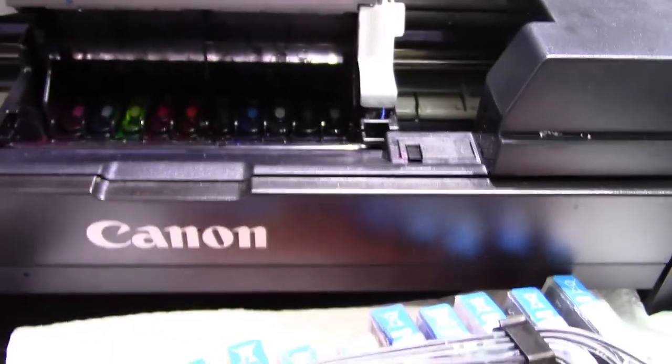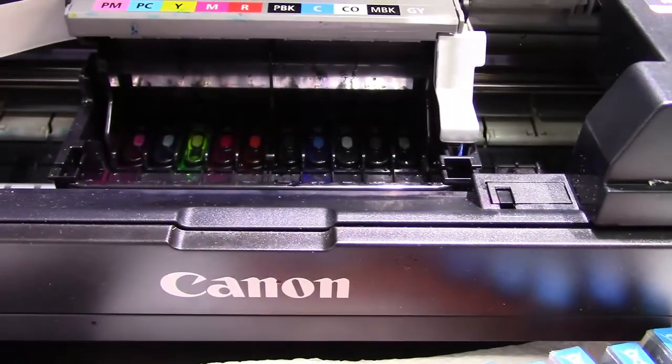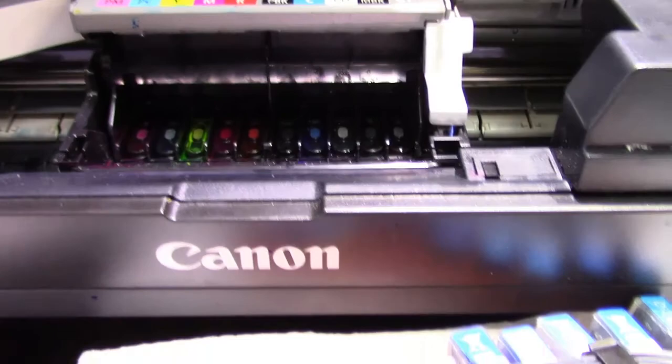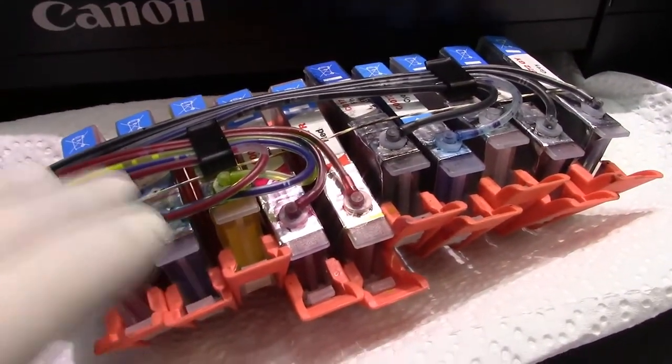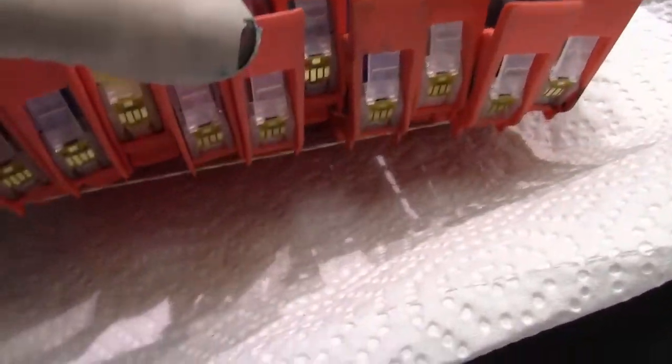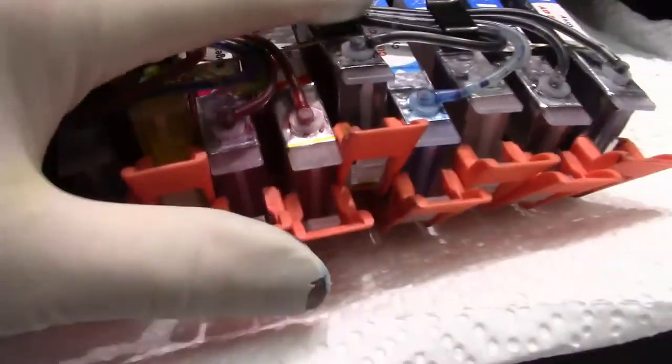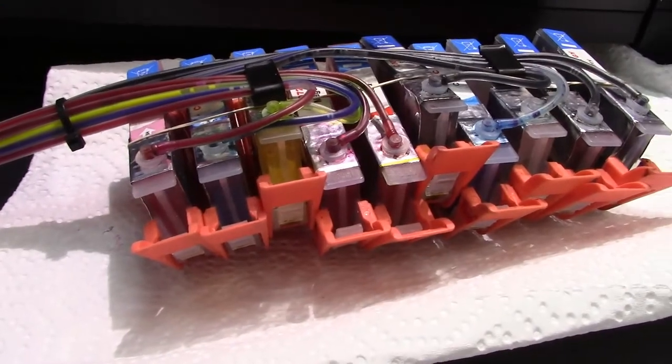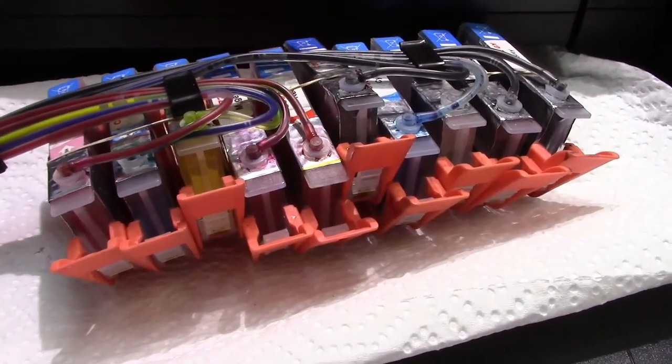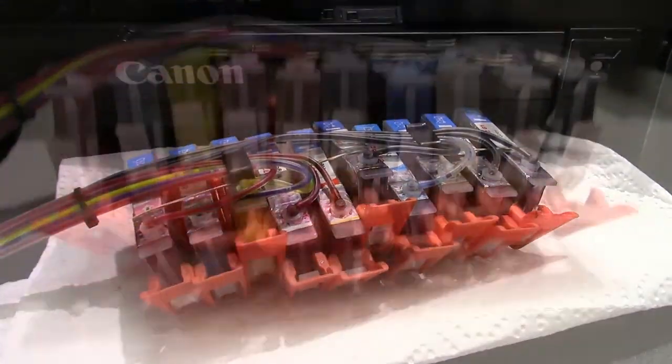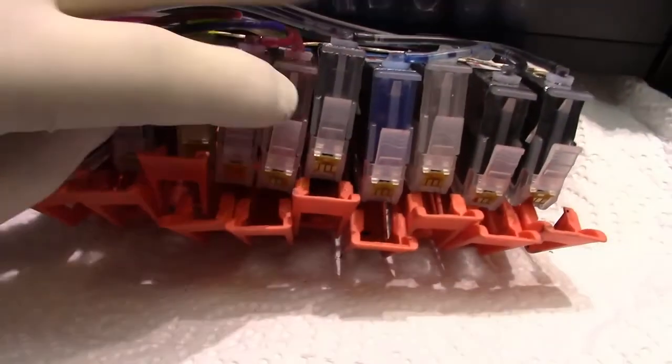I'm going to unsnap them all. Have a paper napkin handy because it can be messy. Just take your time, unclick them, get them set to go, take them out. You can leave the tape that we have on the bottom - that'll hold all the clips together. You want to save these clips should you ever have to prime the system.